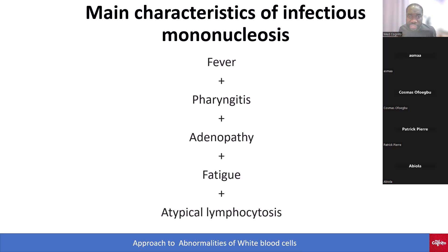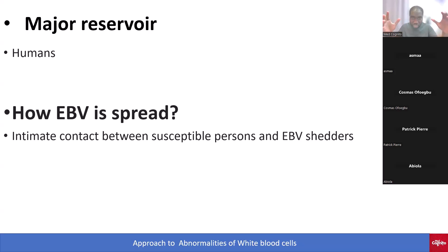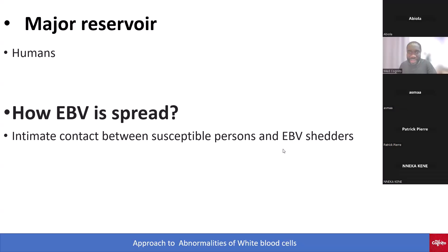Please let's review: what are the five features that should make you think of infectious mononucleosis? — fever, pharyngitis, adenopathy, fatigue, and atypical lymphocytosis. Beautiful.